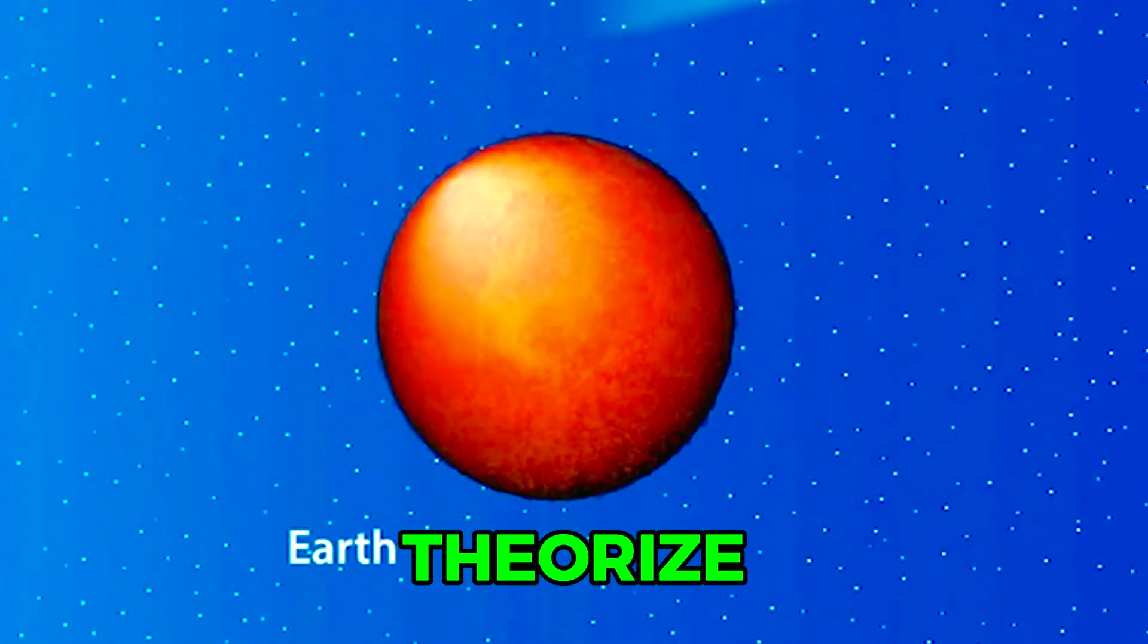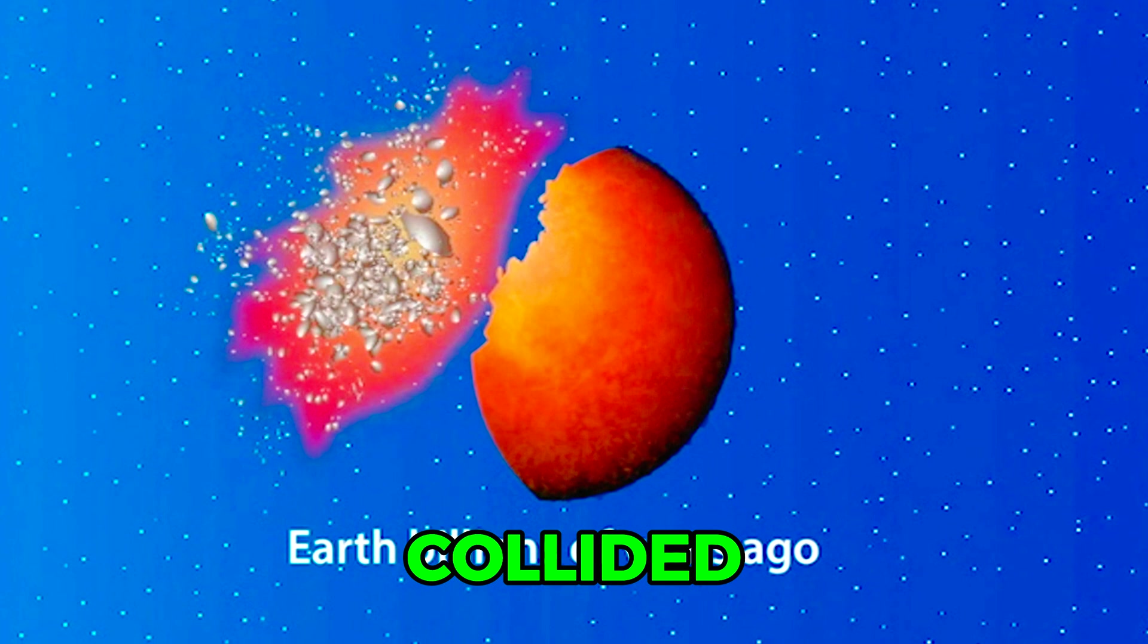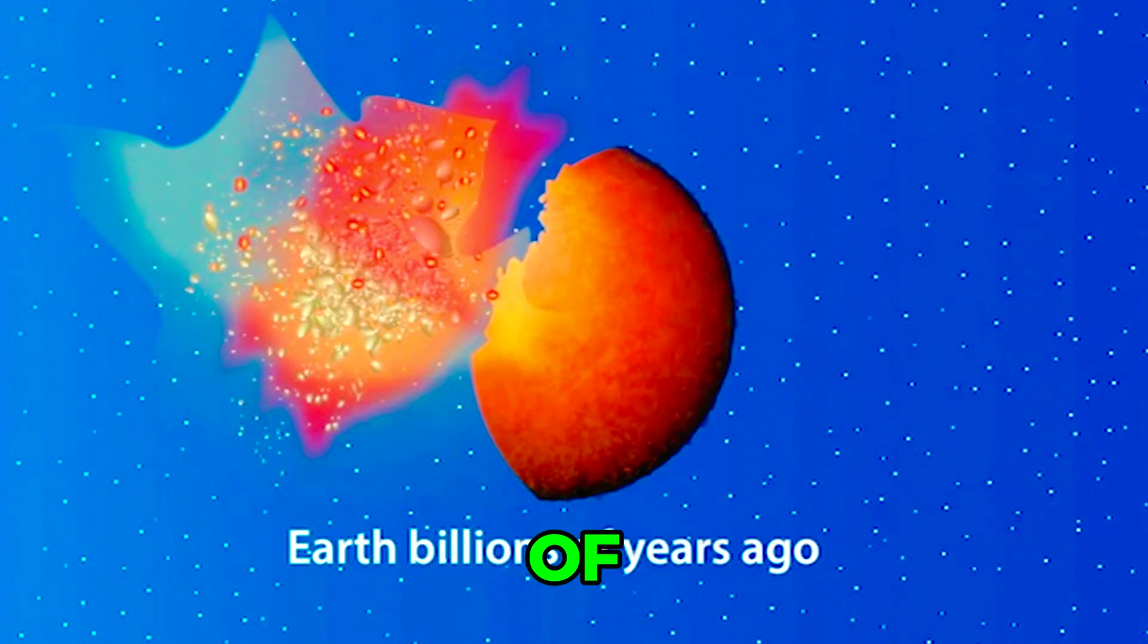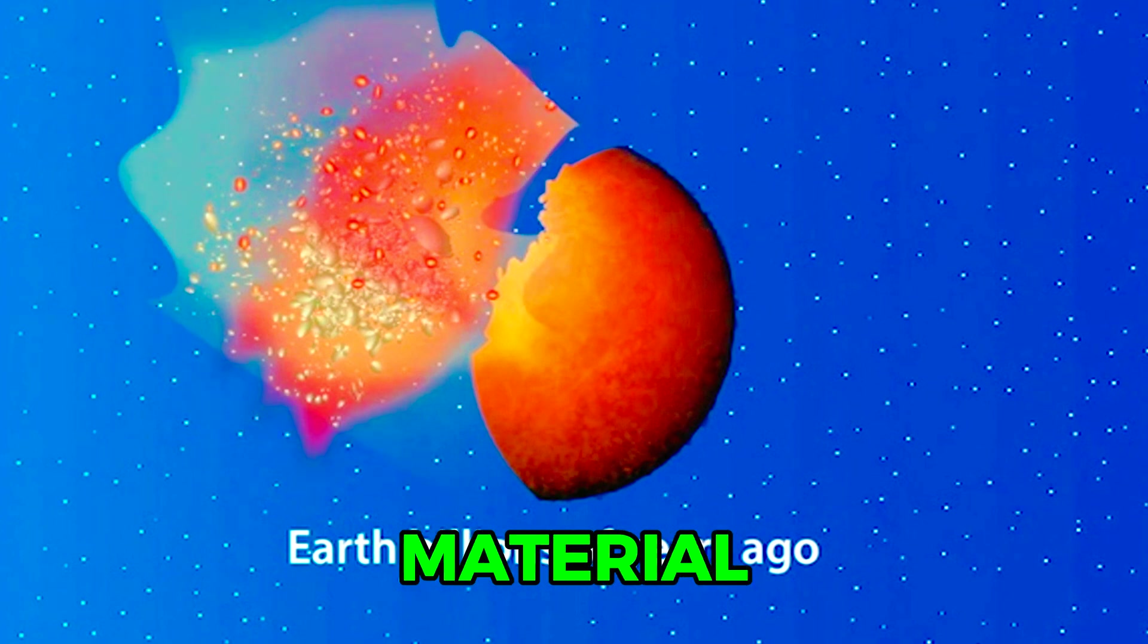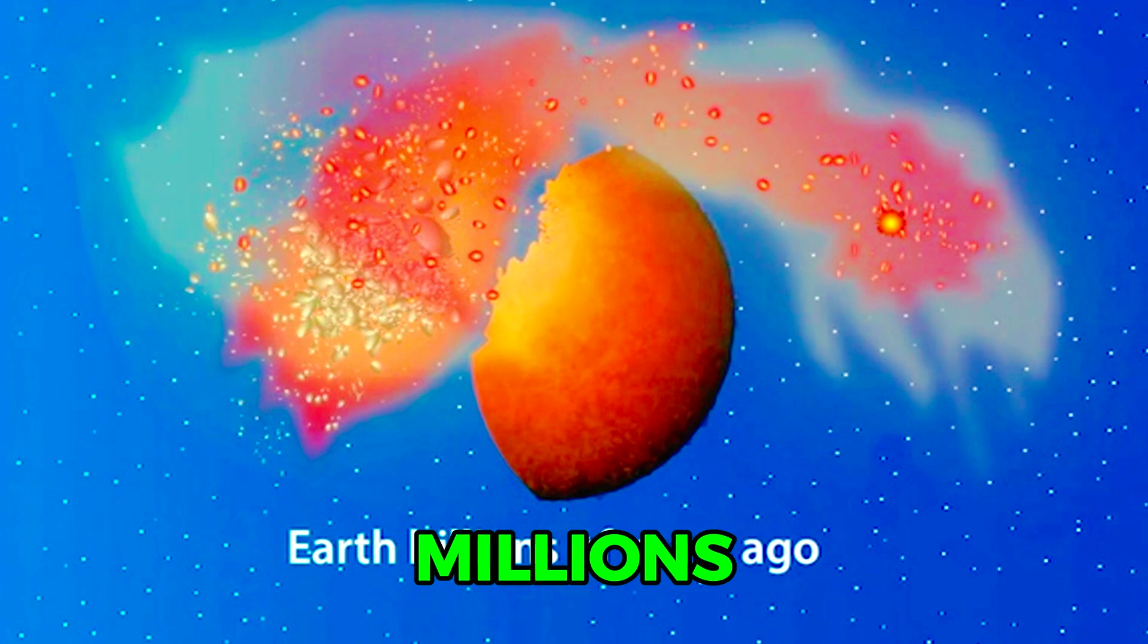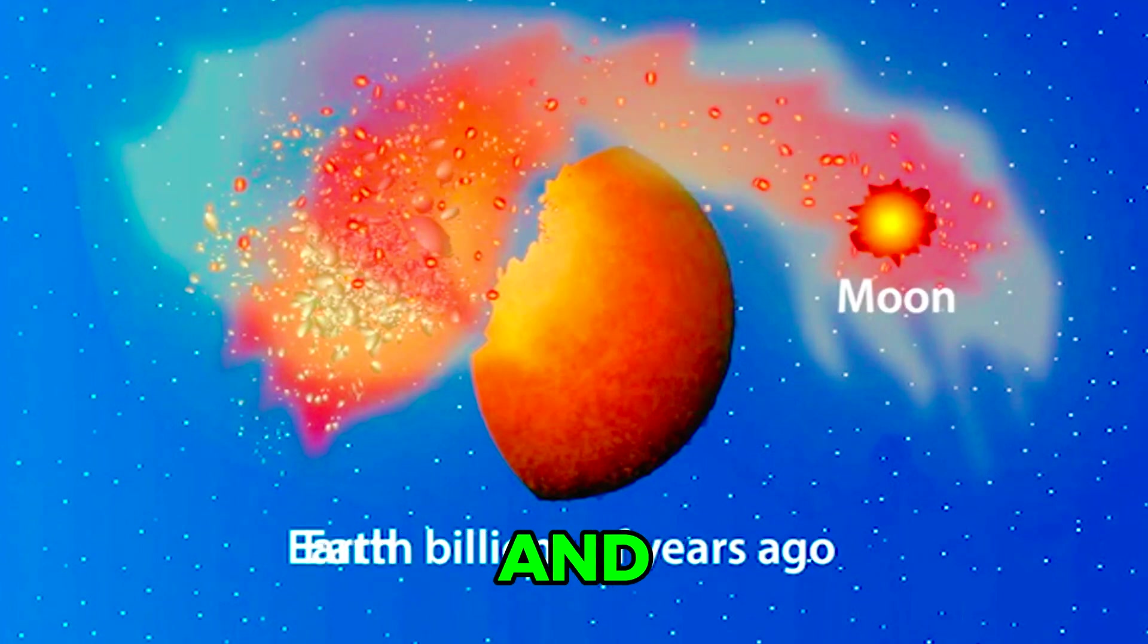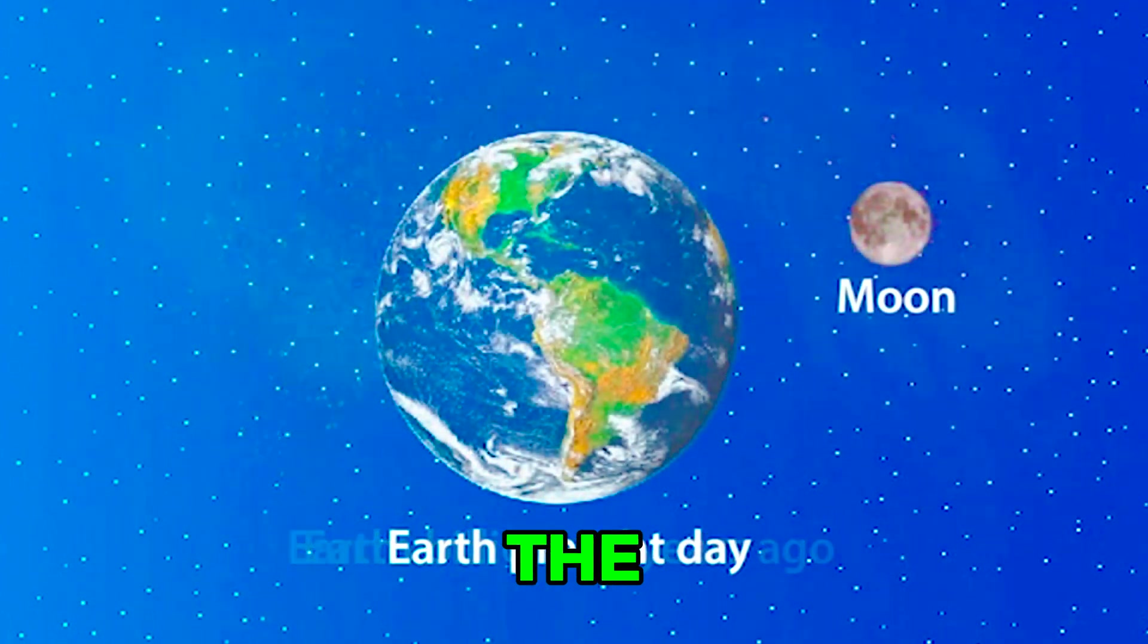Scientists theorize that the Moon was formed billions of years ago when a planet-sized object collided with the newly forming Earth. A large piece of Earth's mantle and debris material was blasted into space. Over millions of years, the molten material accumulated and crystallized to form the lunar crust.